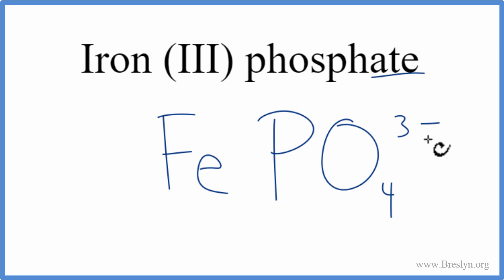We know the phosphate, that's 3-, and the iron, it's a transition metal. That's why they tell us right here in the name, this 3. This Roman numeral 3 tells us its charge is 3+. So these need to add up to zero, 3+, 3-, they do.